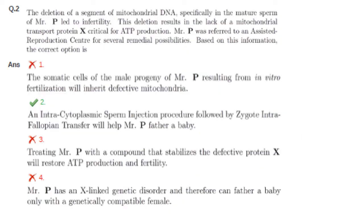Coming to the next question: the deletion of a segment of mitochondrial DNA, specifically in the mature sperm of Mr. P, led to infertility. This deletion results in a lack of mitochondrial transport protein X, critical for ATP production. Mr. P was referred to an assisted reproduction center for several medical possibilities. Based on the information, the correct option is...